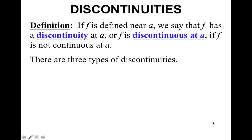Now, with continuities, that brings us to what are discontinuities. If f is defined near a, we say that f has a discontinuity at a, or f is discontinuous at a, if f is not continuous at a. Like our previous example, we could say it was not continuous at 1 because the limit did not exist.